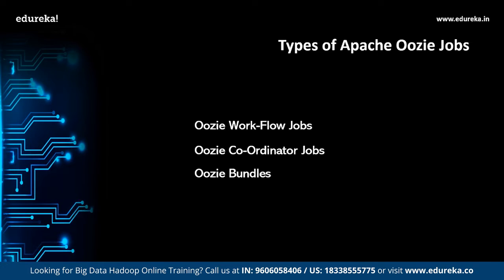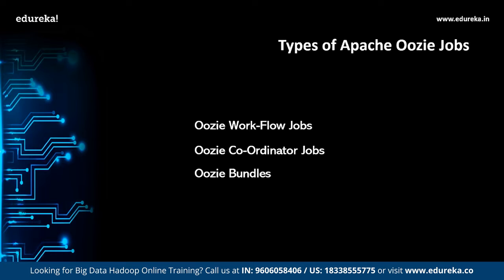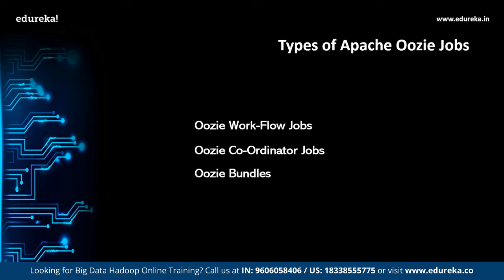Firstly, Oozie workflow jobs — these are directed acyclic graphs or DAGs which specify a sequence of actions to be executed. Next, Oozie coordinator jobs consist of workflow jobs triggered by time and data availability. And lastly, bundles — these can be referred to as a package of multiple coordinators and workflow jobs. Now let us understand all these jobs in a little more detailed way, one by one.